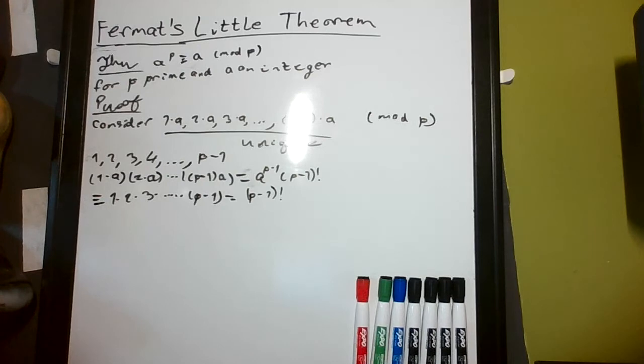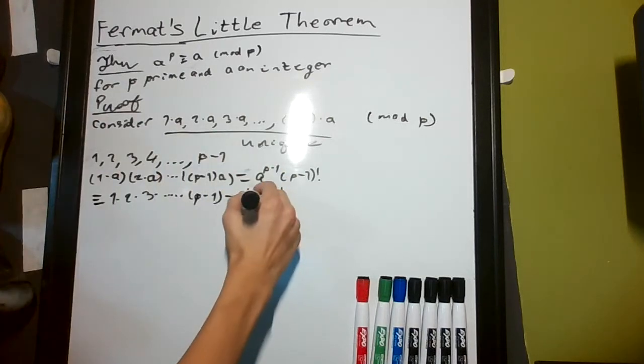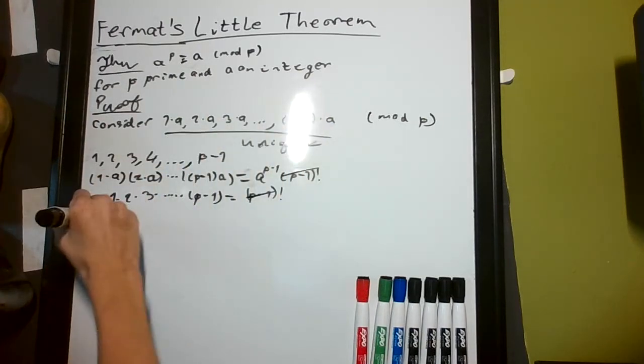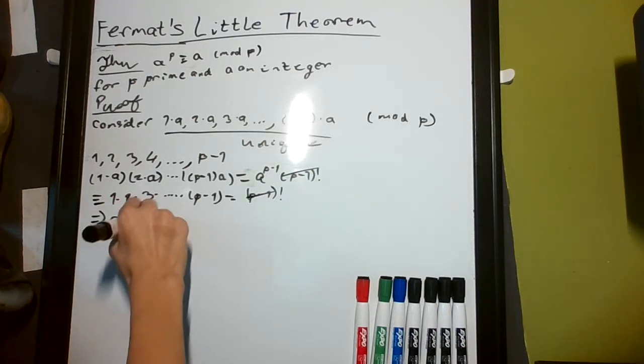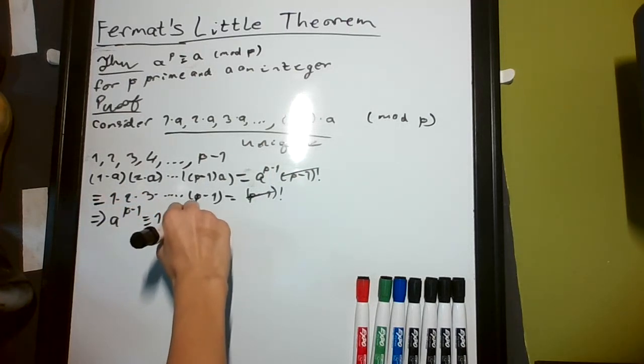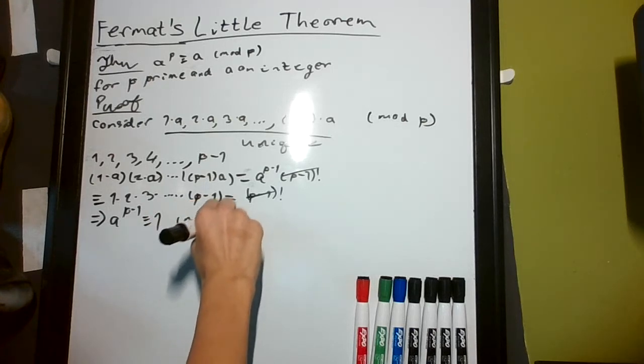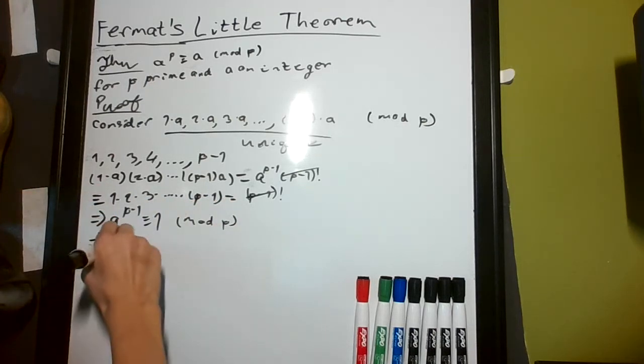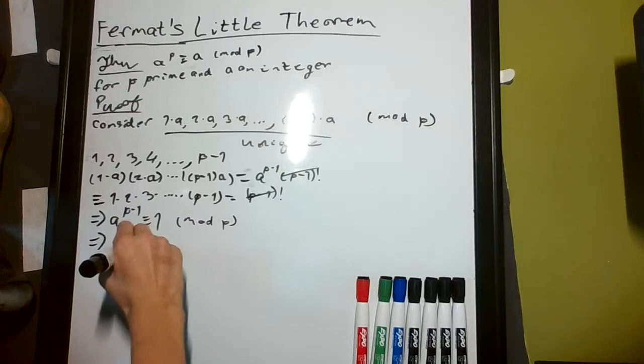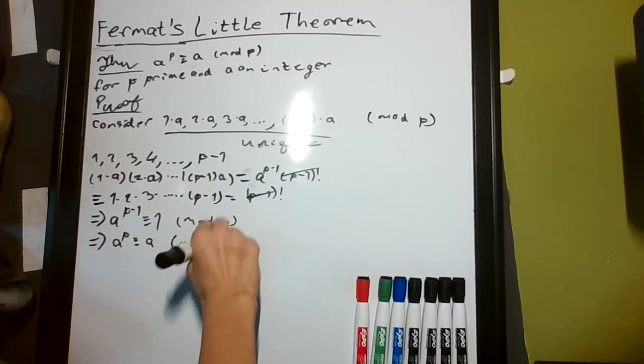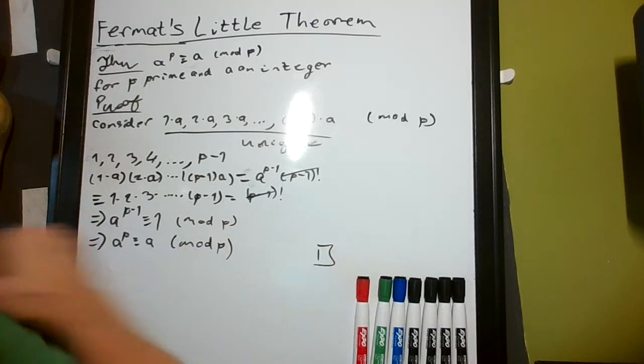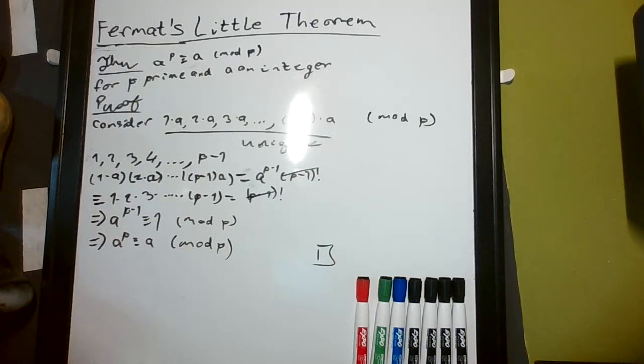Because of that lemma stated before, I can cancel these out and get a to the p minus 1 is congruent to 1 mod p. Then, multiplying both sides by a, we get a to the p is congruent to a mod p. I think this is the best proof out there. Sorry if I went too quickly. Thank you.